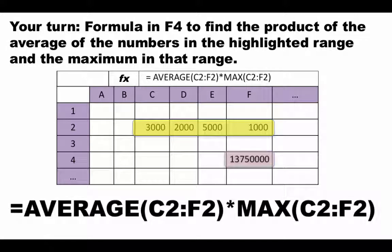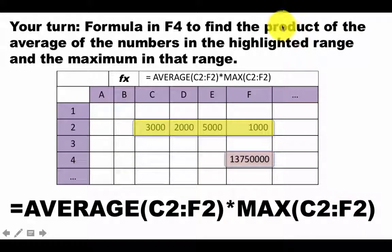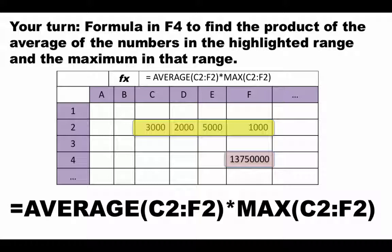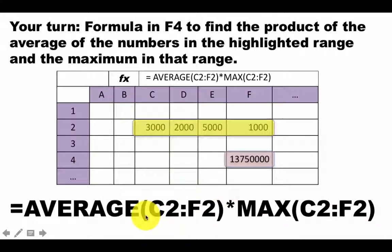You can stitch together a solution using two function calls: equals AVERAGE(C2:F2) — that's the average of the numbers — multiplied by MAX(C2:F2) for the maximum, using a star. Functions are nothing magical. The result of a function call in the context we've seen so far is a number, and you can treat it just as a number inside all kinds of arithmetic expressions. It's just like saying equals one number multiplied by another number.